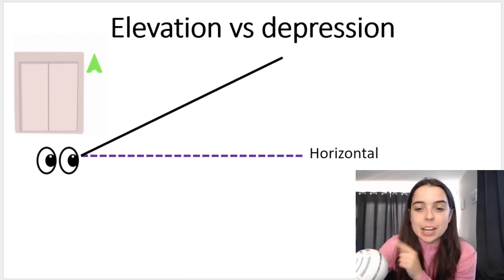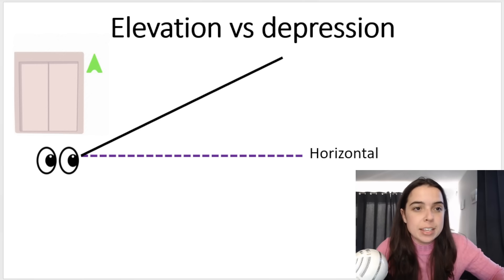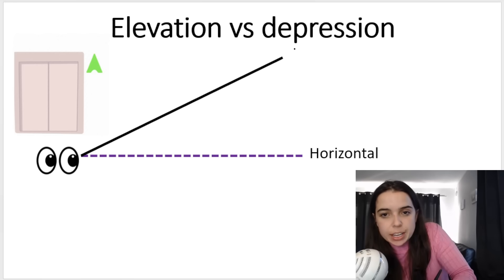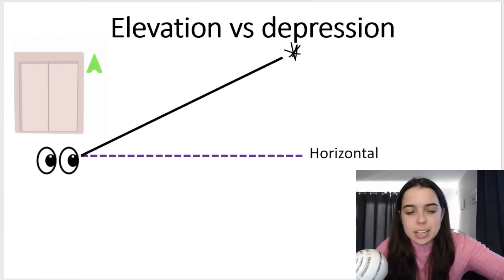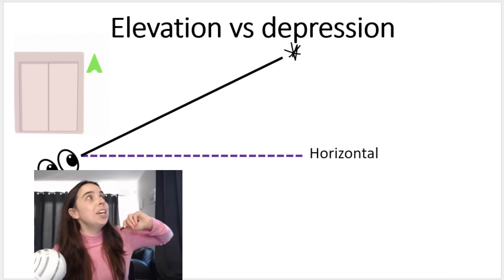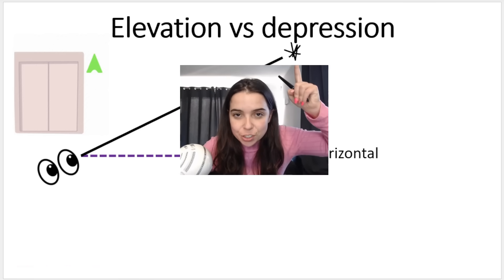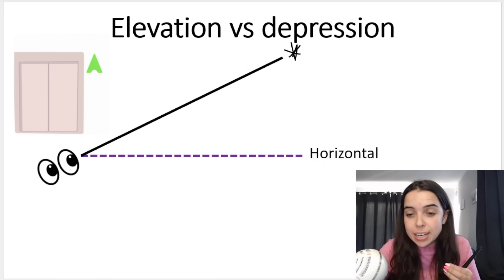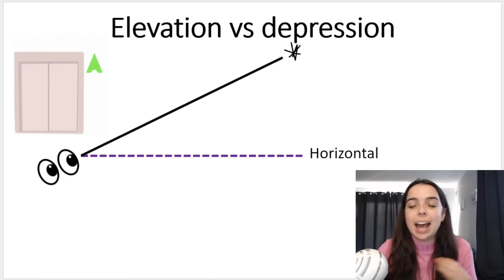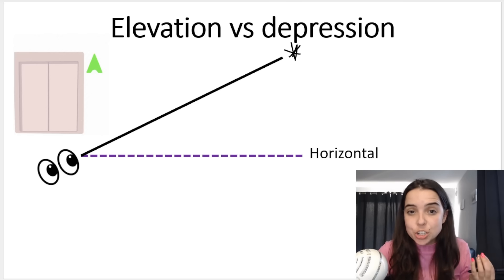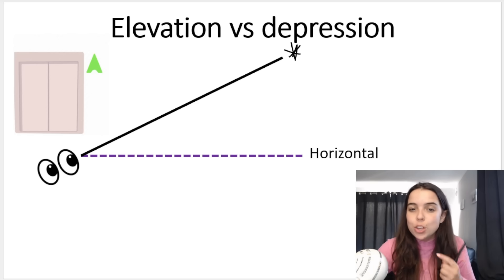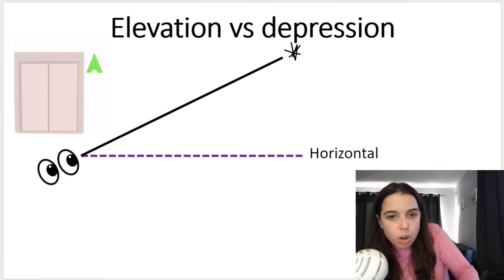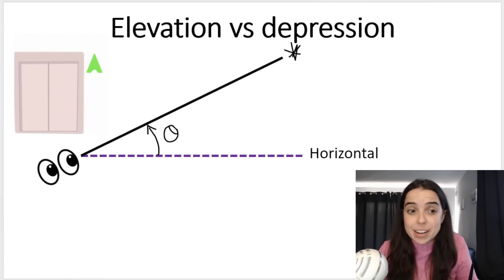So if you look at this picture, you can see there's my line of sight — I'm looking at an object up here. Imagine that's you, looking up. There's your line of sight — you're looking at the star up there. And so it's that angle between the line of sight and the horizontal. It's called angle of elevation because elevation is up — from the horizontal up to your line of sight. That would be your angle of elevation.